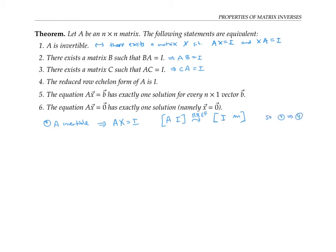Going the other way: if the reduced row echelon form of A is the identity matrix, then we can solve A times X equals I — we just read off the solution from the right side after doing the reduced row echelon form. So we're in situation three, which we said was equivalent to situation one.